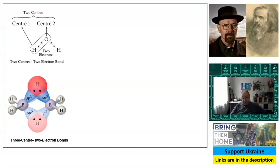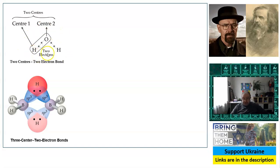Those of you who studied chemistry at some point of your life probably heard that a chemical bond is usually made of two electrons. So you have one atom that comes with one electron, another one with another electron, and those electrons make this chemical bond by hybridization. So in this case we have a water molecule — you have hydrogen and oxygen. Oxygen has two valence electrons, each hydrogen has one valence electron, so we have two hydrogen-oxygen bonds making the water molecule.